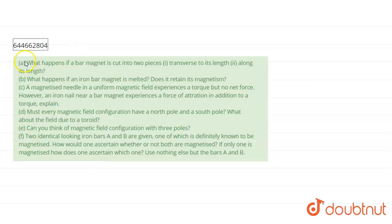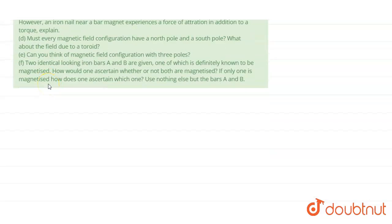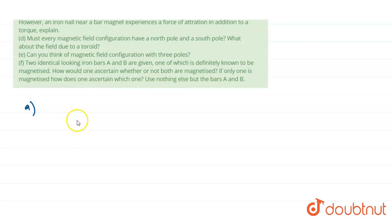What is the first question? Part A asks: what happens if a bar magnet is cut into 2 pieces? The first case is transverse to its length and the second is along its length. So first of all, we can analyze what is given in the question. In question A, a bar magnet is cut in two different modes.